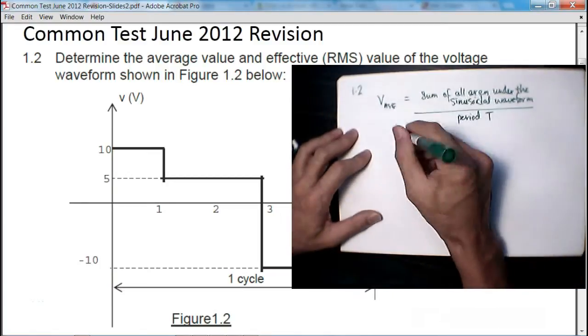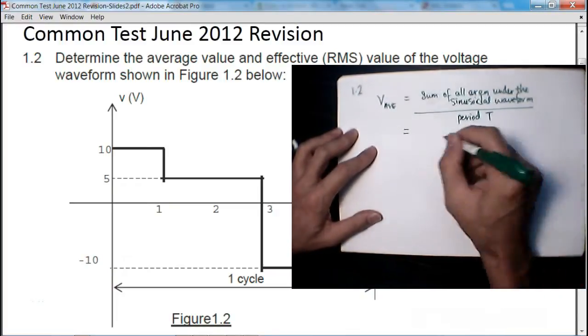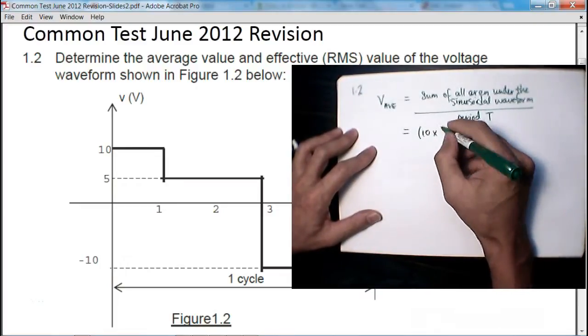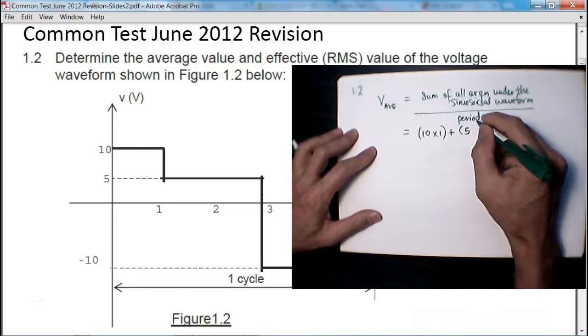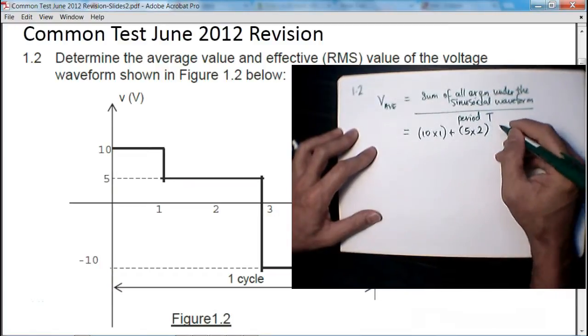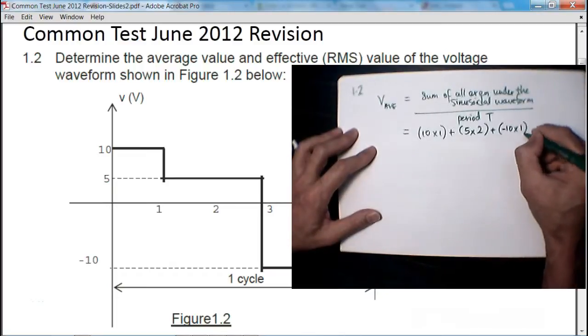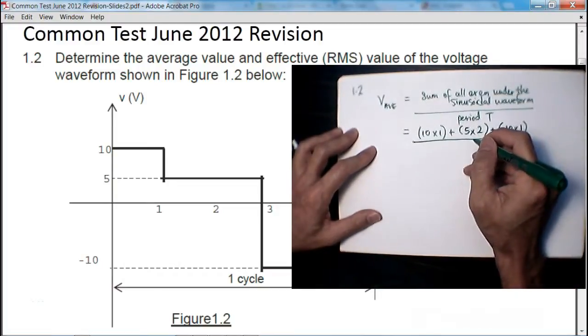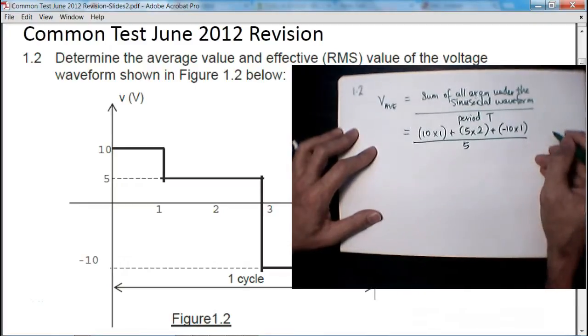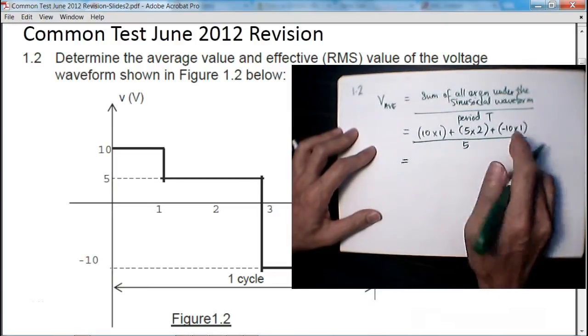So in this case we have the first millisecond, 10 volts times 1 millisecond, plus 5 volts times 2 milliseconds duration, plus minus 10 volts times 1 millisecond, and the total divided by the period T, which in this case is 5 milliseconds. This gives me 10 plus 20 minus 10, so it's 10 over 5, that's 2 volts average value.